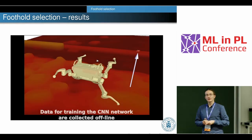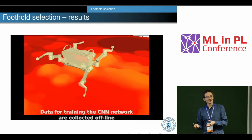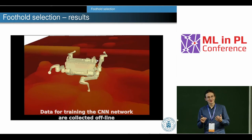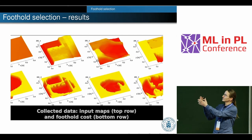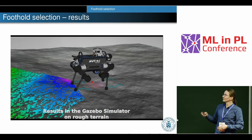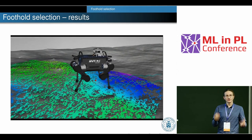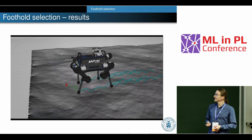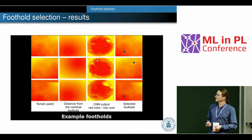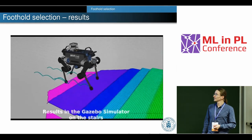Importantly, to train the neural network we collected data in simulation, because it's difficult on a real robot — we need a lot of data, it's time-consuming, and we could destroy the robot. For each input elevation map in the simulator, we compute the cost map, then use it online on the real robot. We can use it on rough terrain — this is shown in Gazebo — and also on stairs.